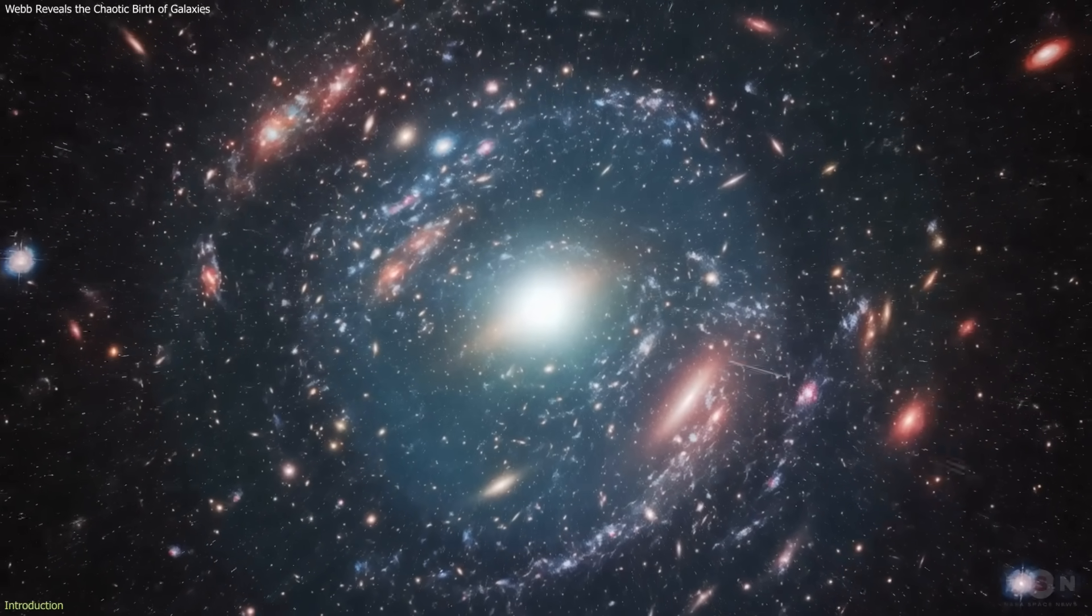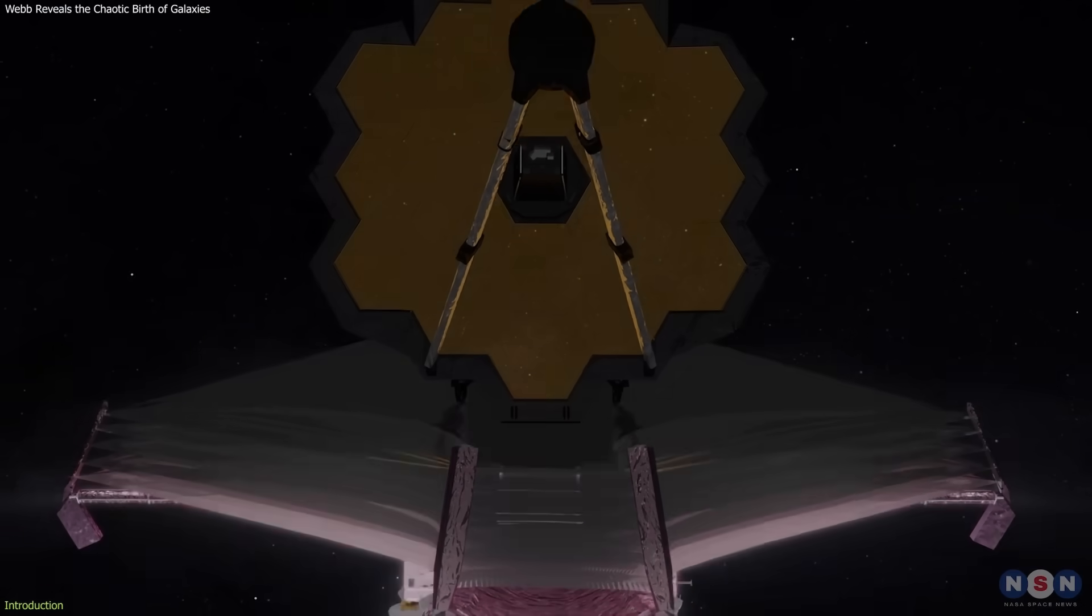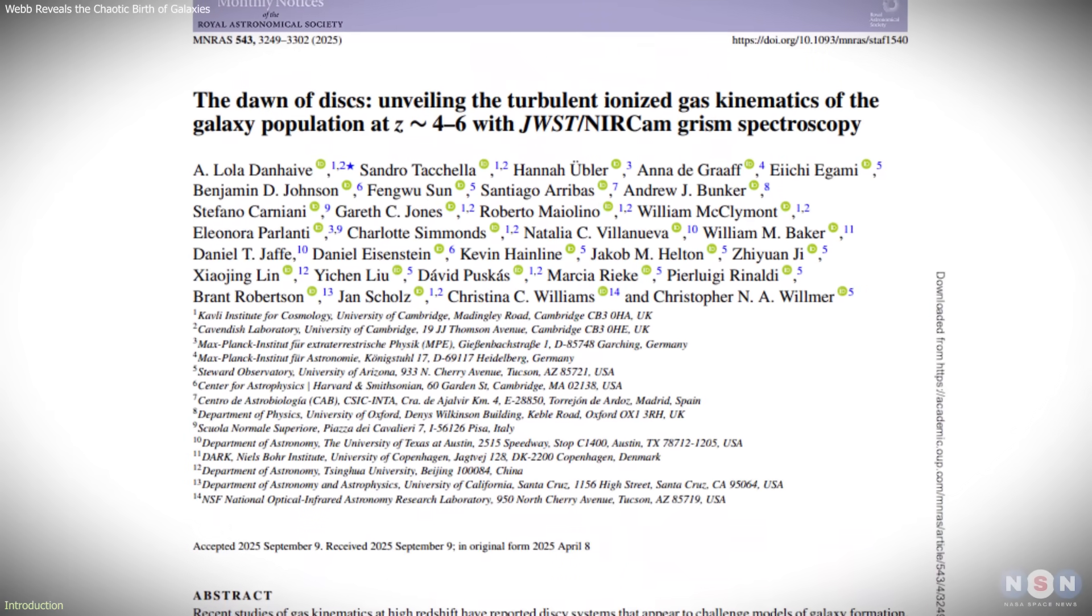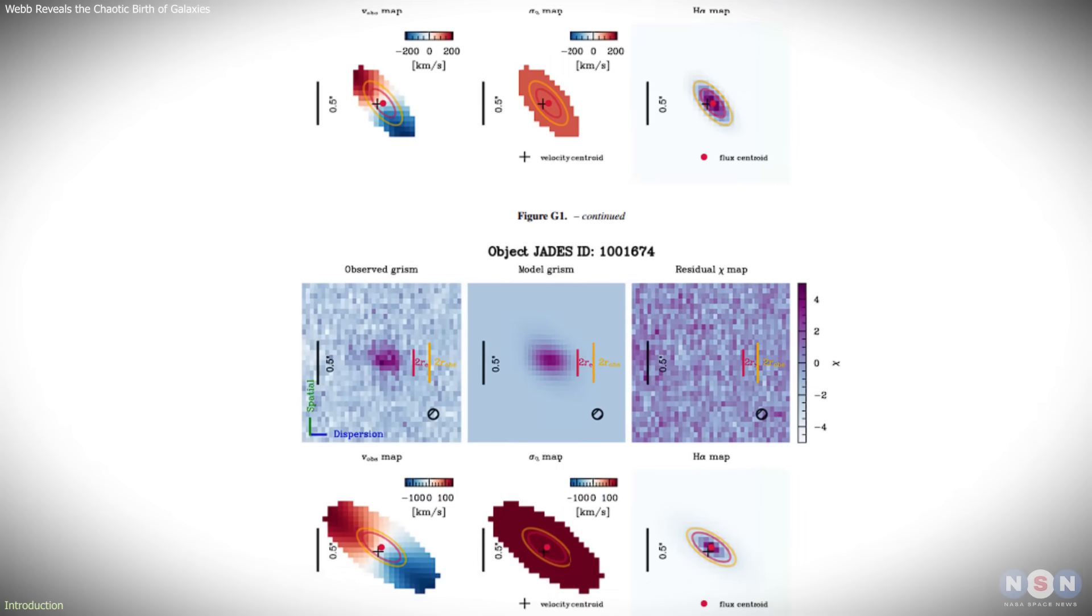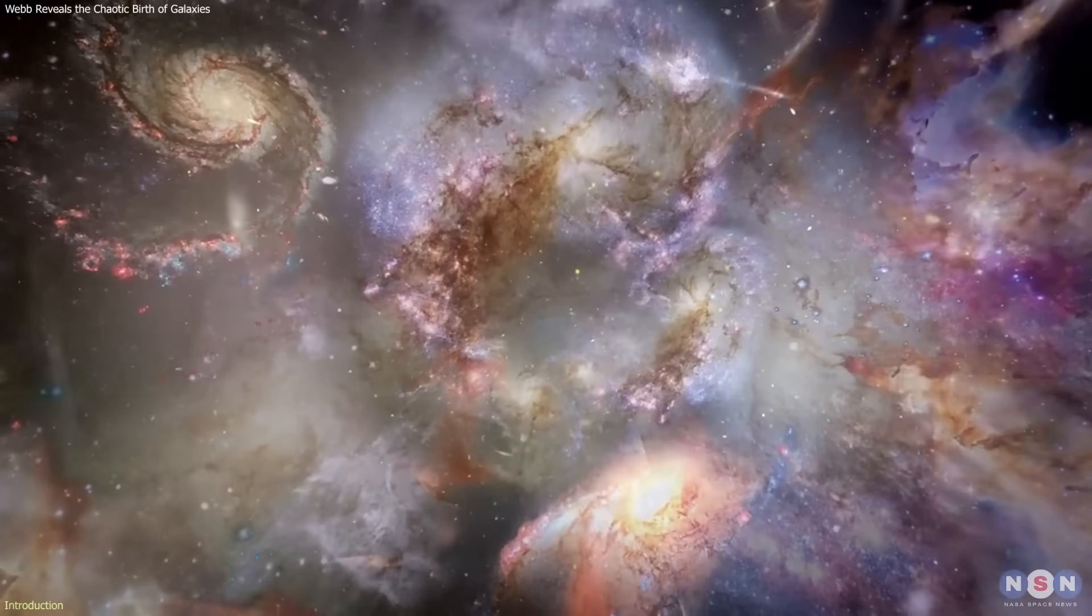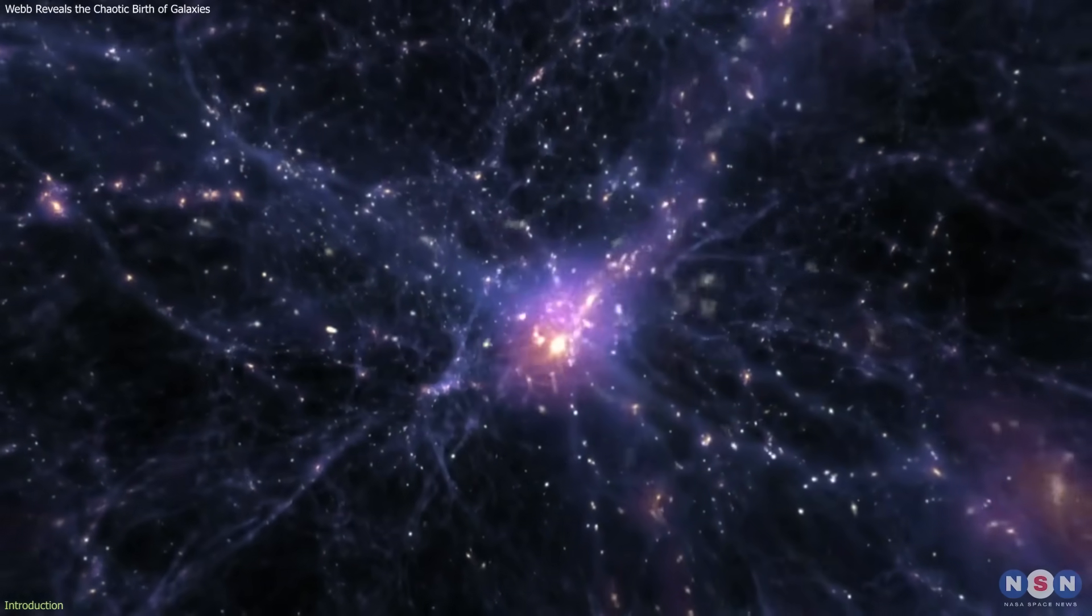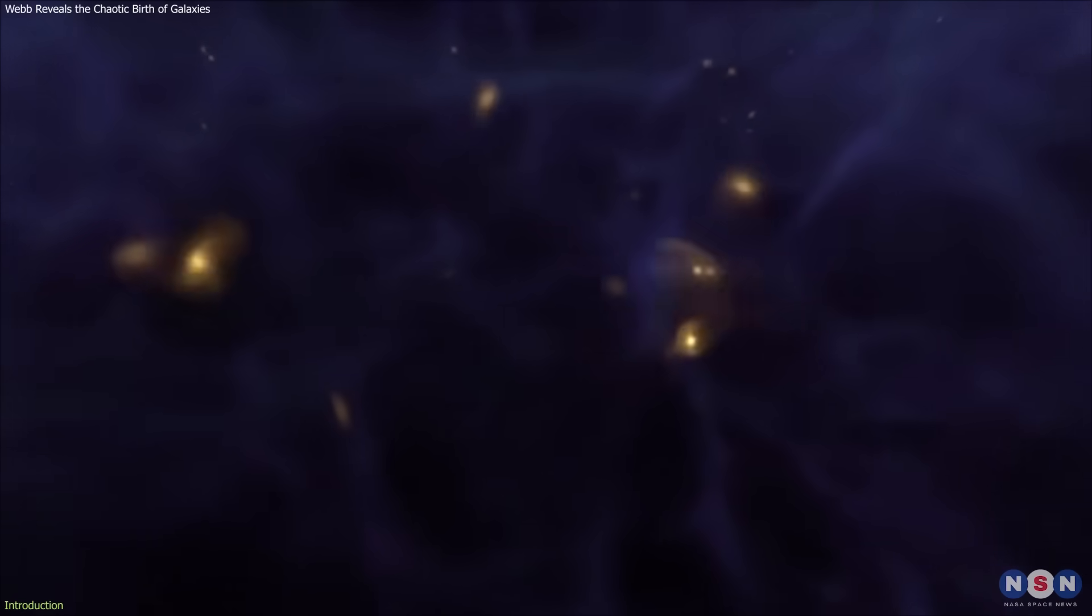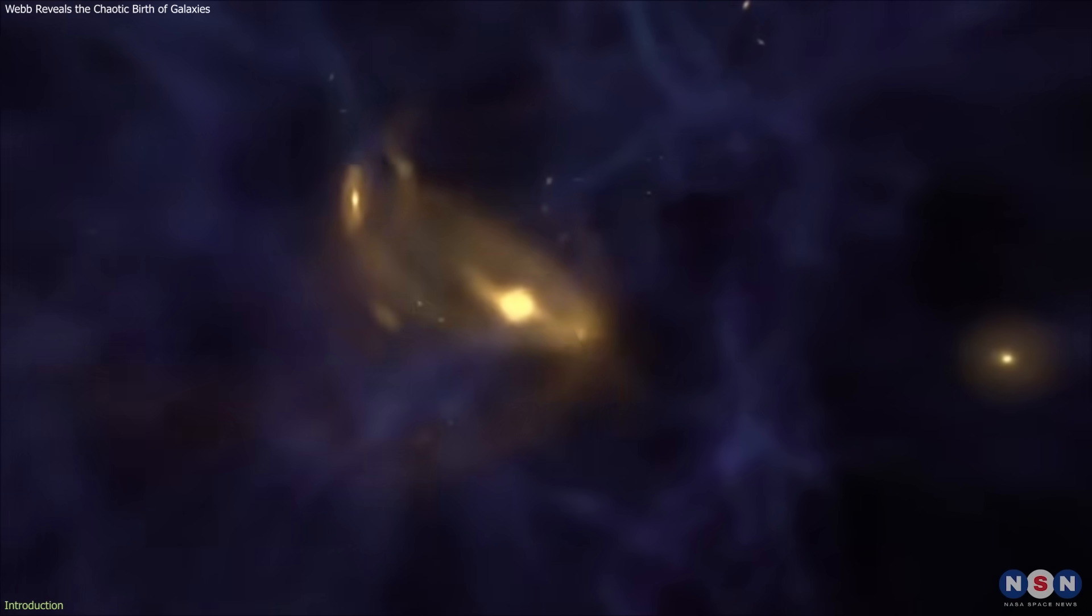Astronomers have uncovered a new side of the early universe. Using the James Webb Space Telescope, a team from the University of Cambridge studied more than 250 young galaxies and found that most were anything but calm. Instead of structured rotating disks, they were chaotic, clumpy, and turbulent, struggling to stabilize in their first billion years. This discovery reshapes how we understand galaxy formation and early cosmic structure.